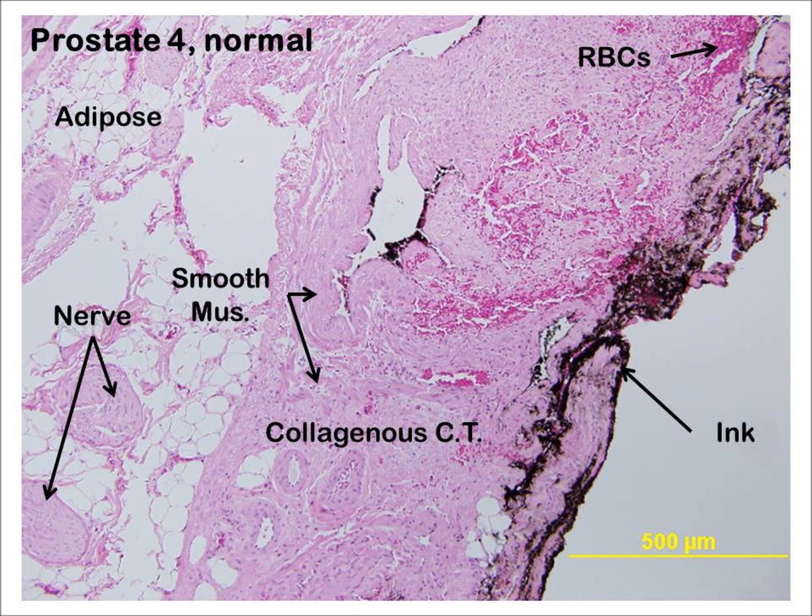Place the slide on the microscope and examine both sections under low power. This figure shows the region near the capsule and contains the ink that indicates the surgical margin. The capsule itself contains a mixture of both smooth muscle and collagenous connective tissue. There appears to have been some bleeding in the section since the connective tissue contains red blood cells, or RBCs, that are eosinophilic staining. Also note the nerve tissue that is encapsulated and has a wavy appearance; the nuclei here belong to the Schwann cells that myelinate the axons.